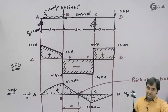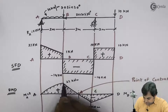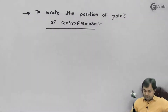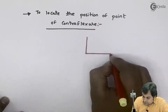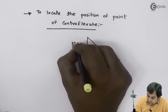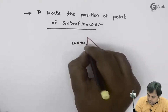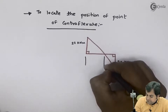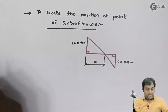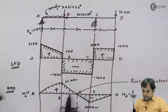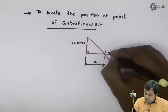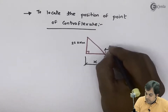I will draw the larger triangle at distance x and the smaller triangle. The value of the height of the larger triangle is 22 kilonewton meter and the smaller triangle height is 20 kilonewton meter. This distance is x, and between B to C it is 3 meters, so from B taking x the remaining distance is 3 minus x.